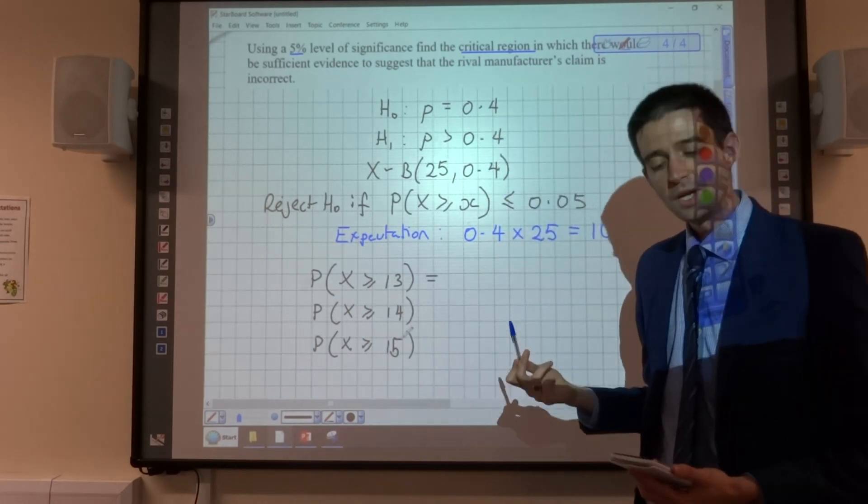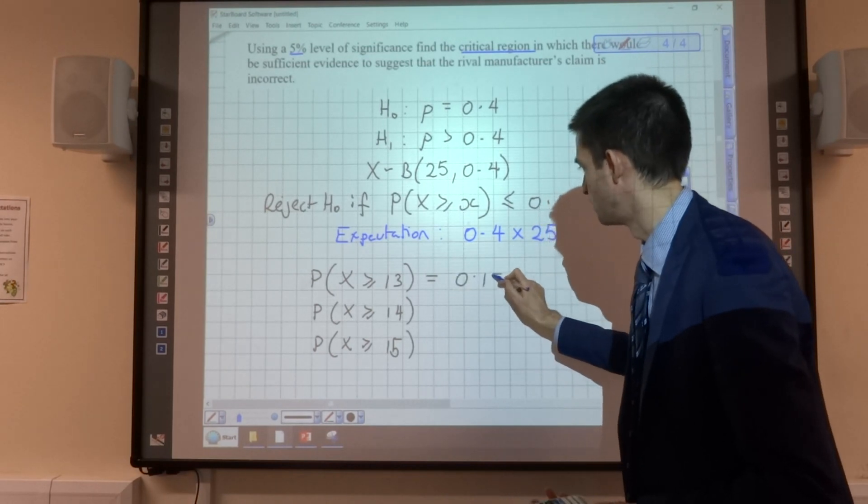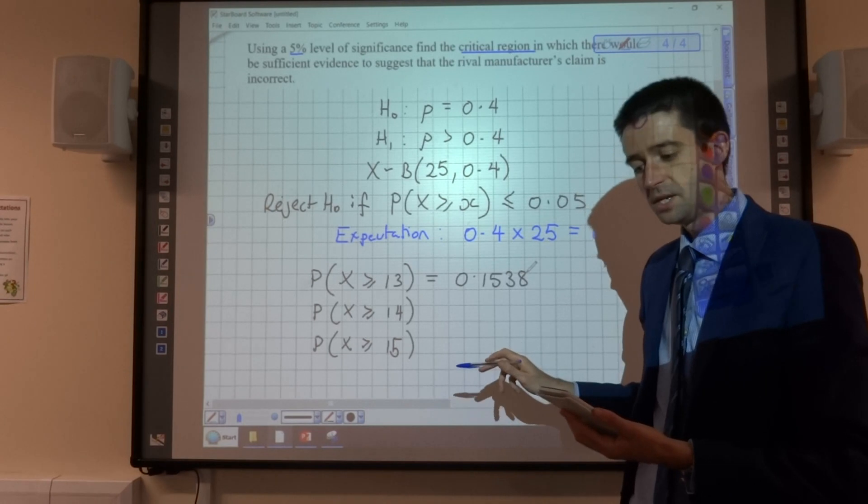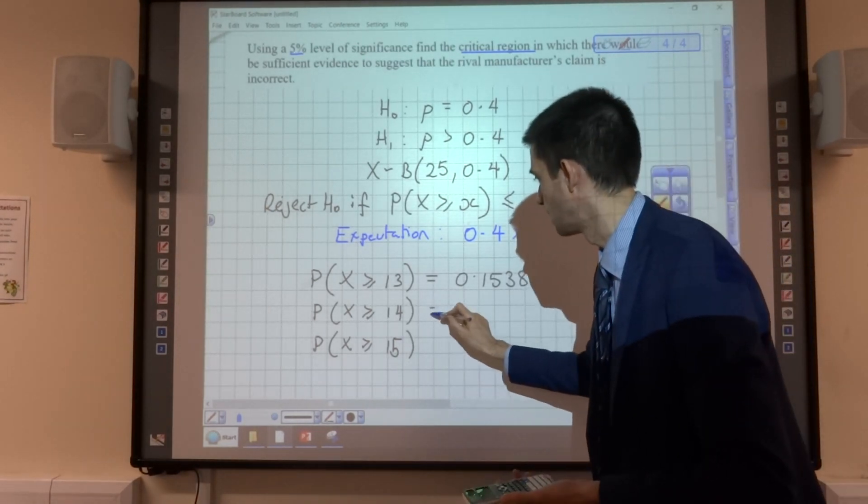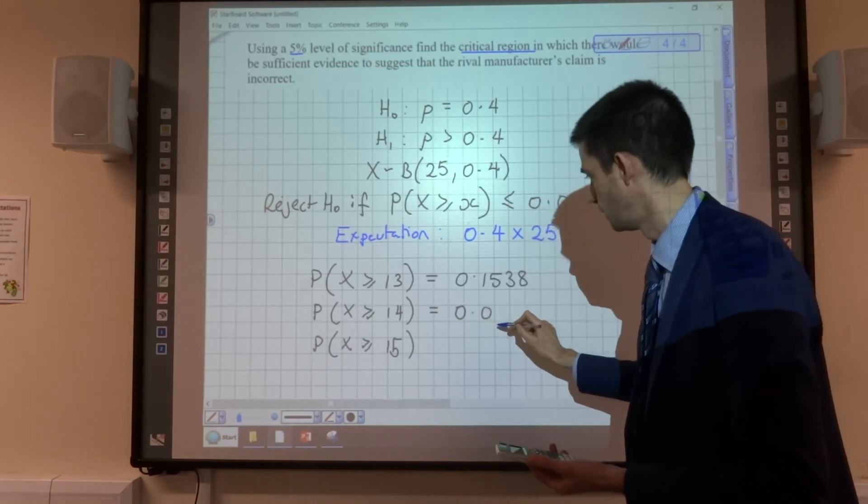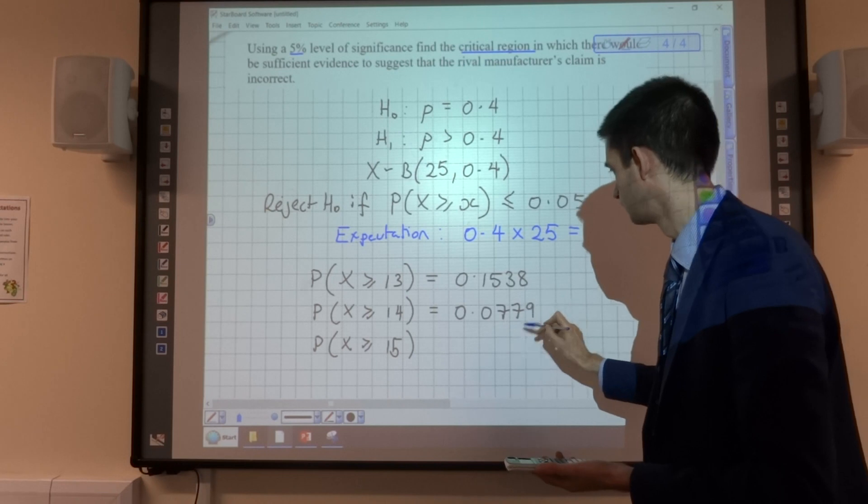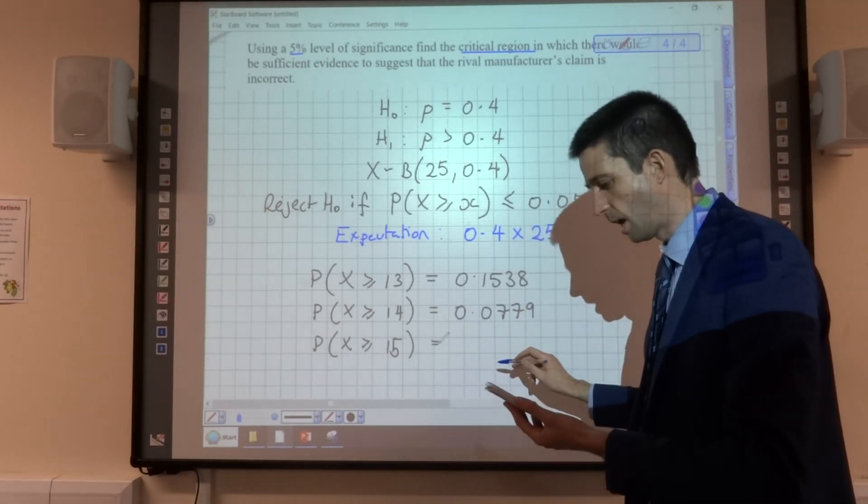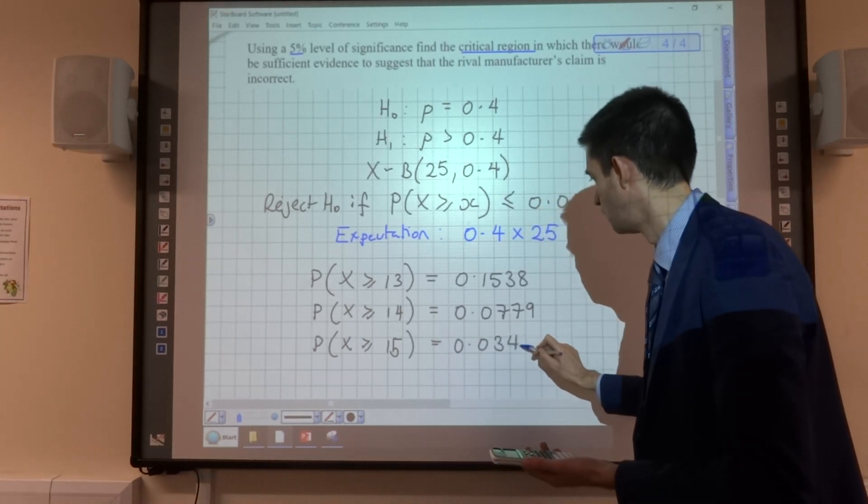The probability of being greater than or equal to 13 is 0.1538. The probability of being greater than or equal to 14 is 0.0779. The probability of being greater than or equal to 15 is 0.0344.